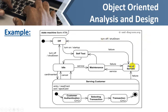From off, when turned on, the ATM goes to self-test again. If there is a problem during self-test, a failure event sends it to out-of-service. We can then try to service it and bring it back to maintenance. If it is maintained successfully it returns to idle; if not, we shut it down. So this diagram clearly describes all the state transitions of an ATM machine.